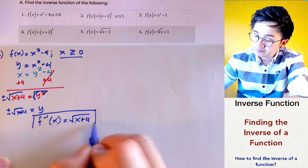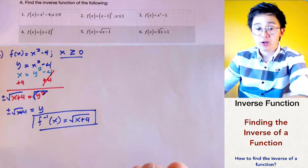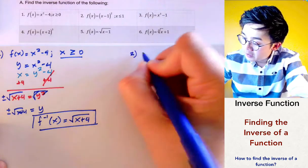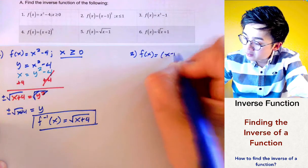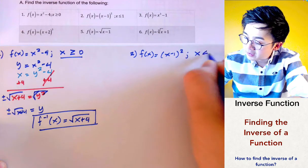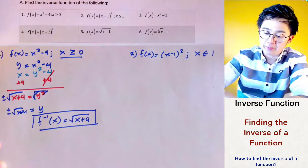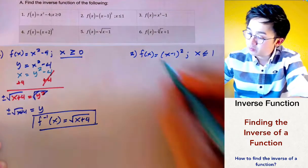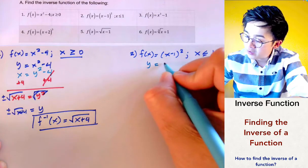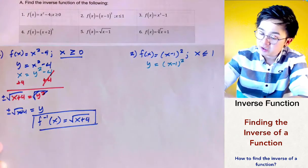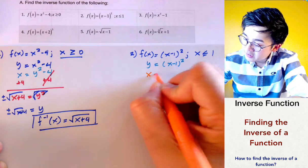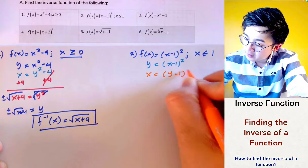So f⁻¹(x) = √(x + 4) is our inverse function for problem number one. For problem number two, we have f(x) = (x - 1)² and the restriction is that x should be less than or equal to 1. We rewrite f(x) as y = (x - 1)² and interchange x and y, giving us x = (y - 1)².